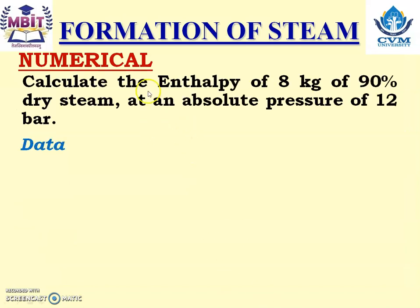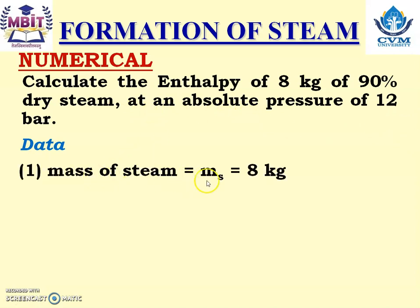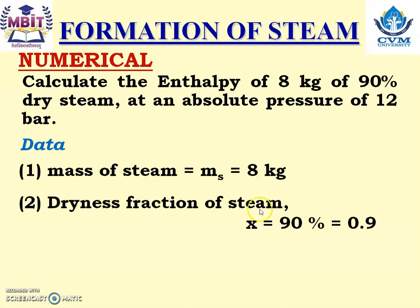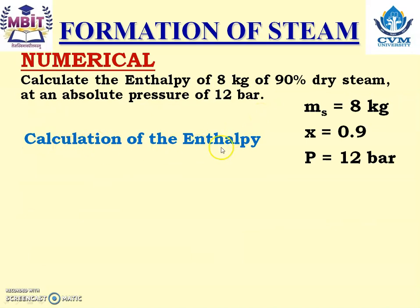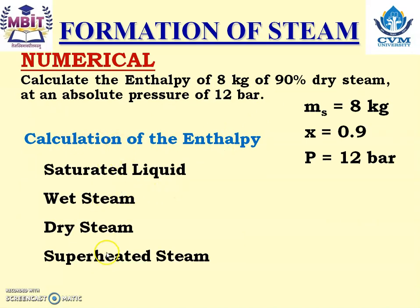Now let us study the numerical. Calculate the enthalpy of 8 kg of 90% dry steam at an absolute pressure of 12 bar. Data given: mass of steam = 8 kg, dryness fraction X = 0.9, pressure = 12 bar. From this data, we have to calculate enthalpy. There are four types of steam: saturated liquid, wet steam, dry steam, and superheated steam, each with a different equation. So first we must identify which type of steam is given.